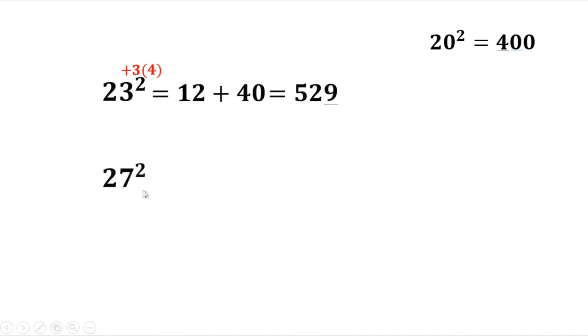Let's try 27 squared. 27 is 20 plus 7. So 7 times 4, that's 28. Then plus 40, that's 68. Then your last number, the square of 7, that's 49. So that's 729.